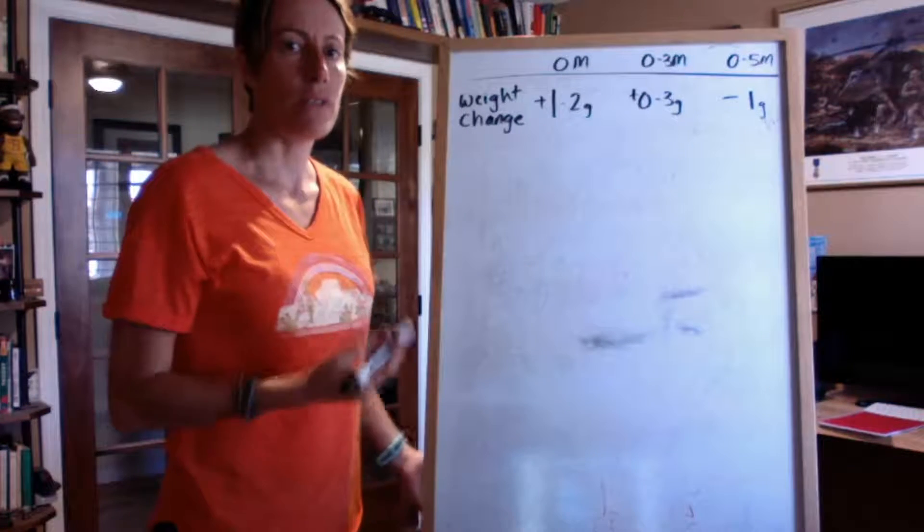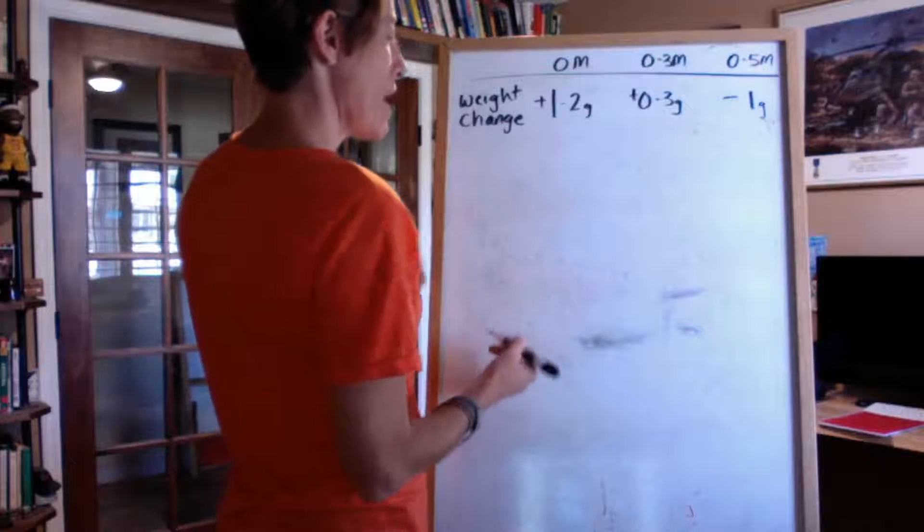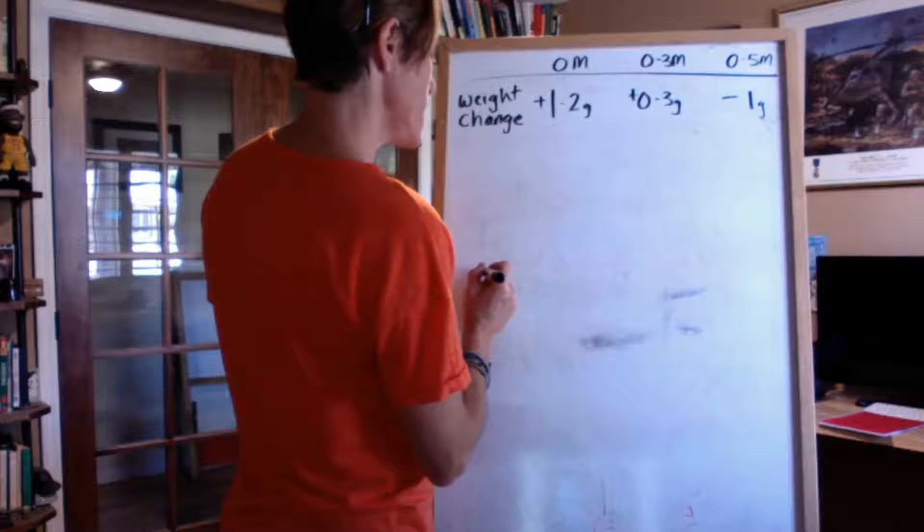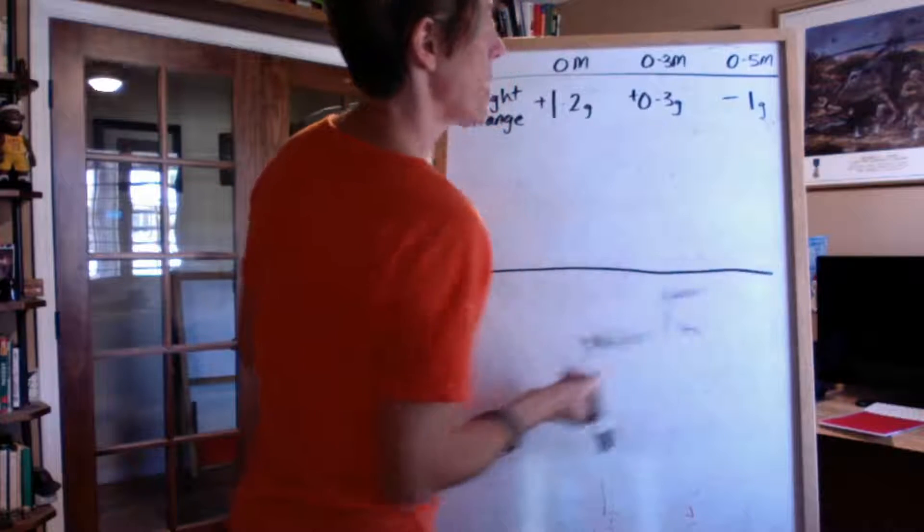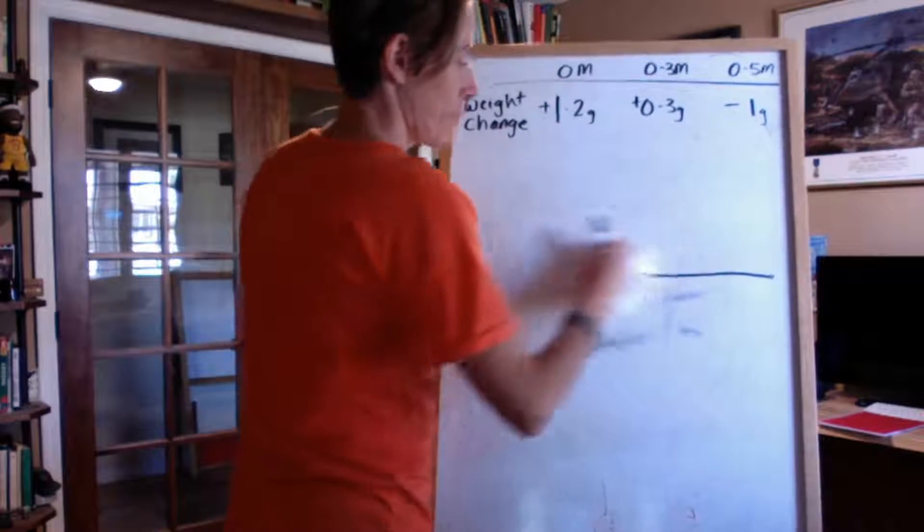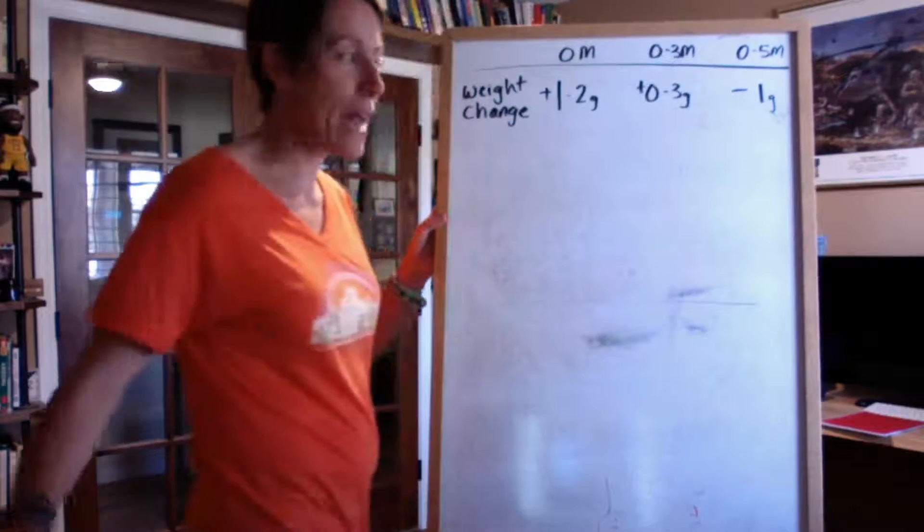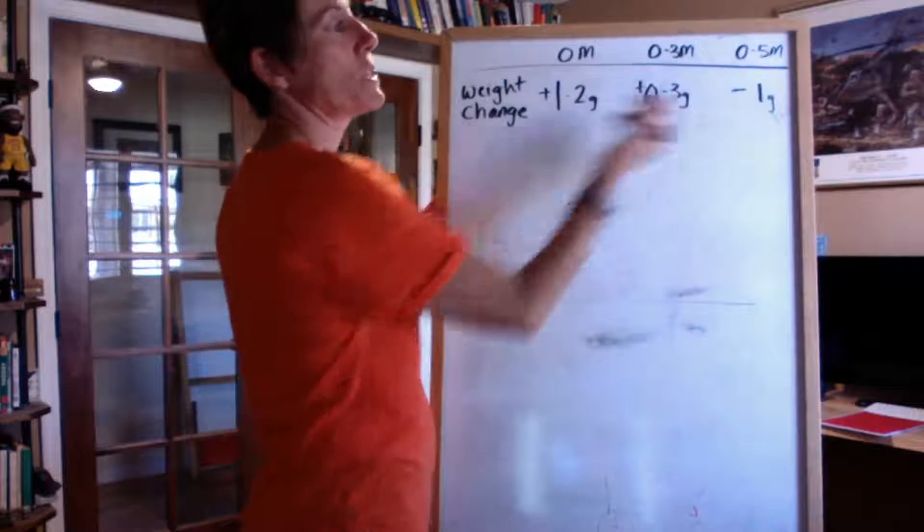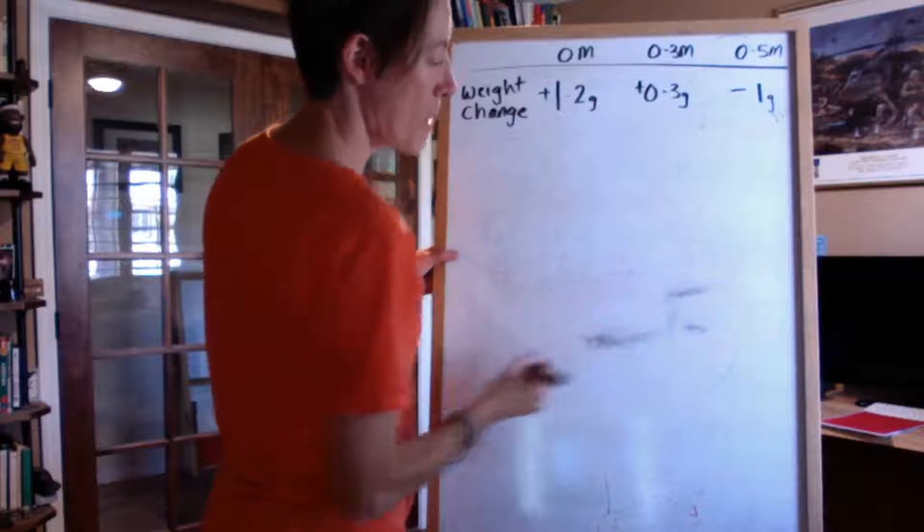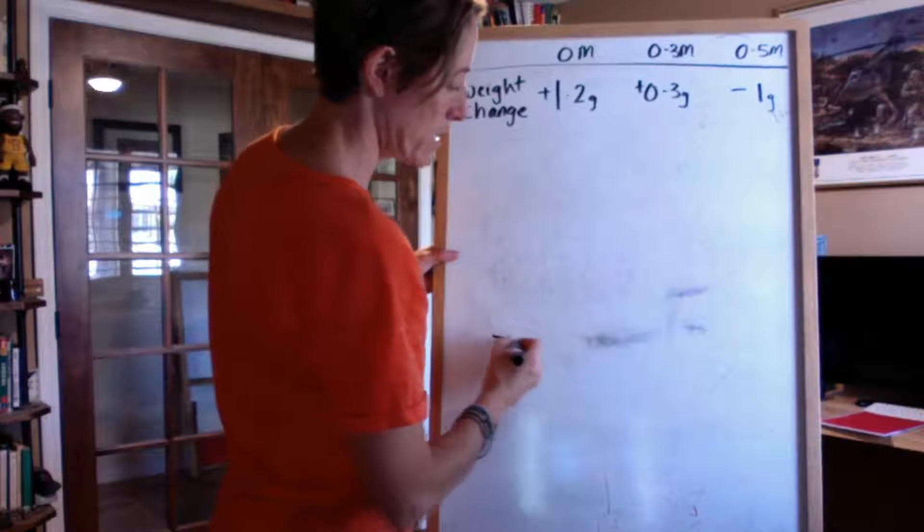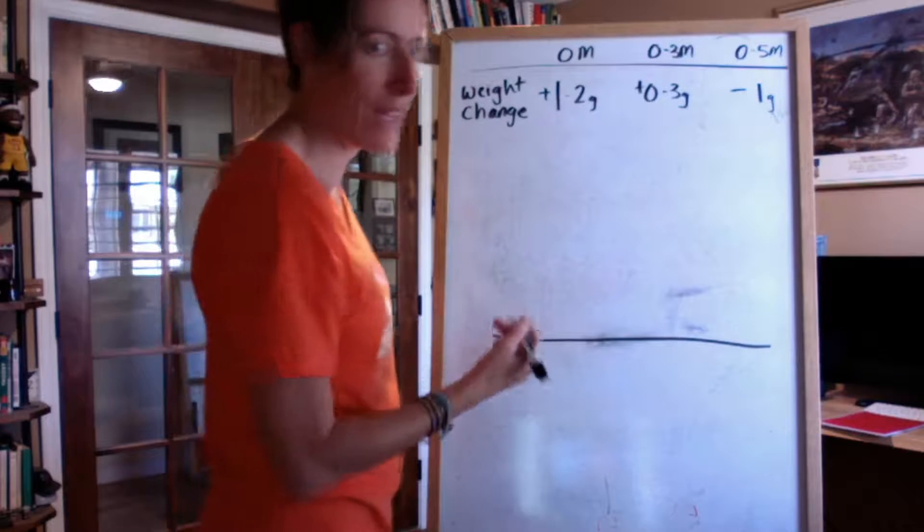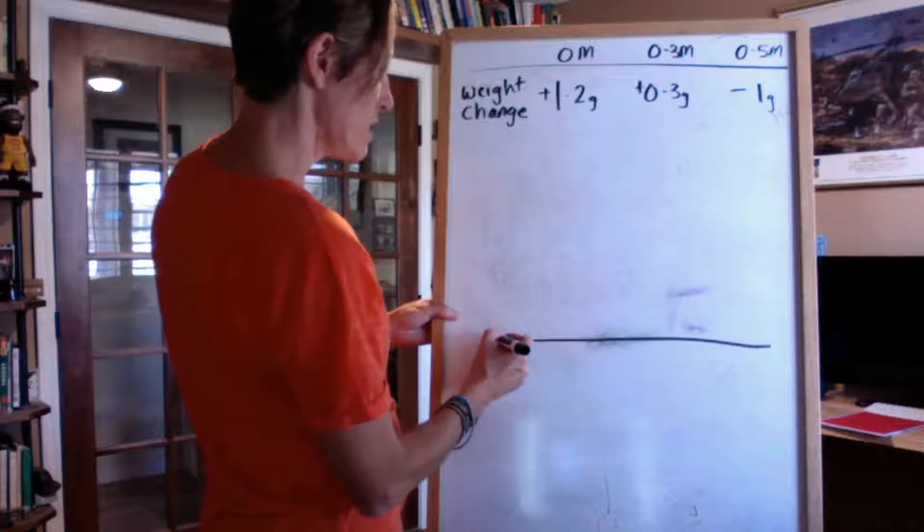We're going to draw a graph of this data. To draw the graph, the thing that we put on the x-axis is the stuff that we set as experimenters. Actually, I'm going to draw that a little lower. And in this experiment, we set these concentrations. We said we're going to test 0, 0.3, and 0.5. So I'm going to put those along my bottom axis here, my x-axis. If I was doing this for real, I'd be using graph paper and a ruler, but I can't do that.